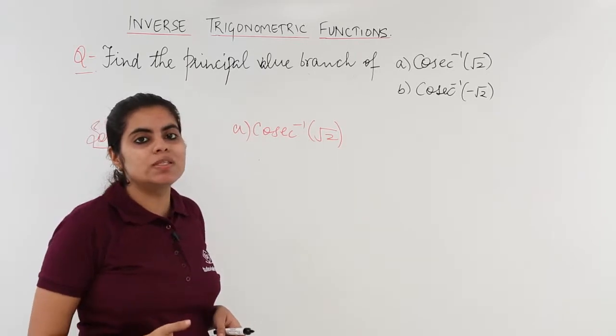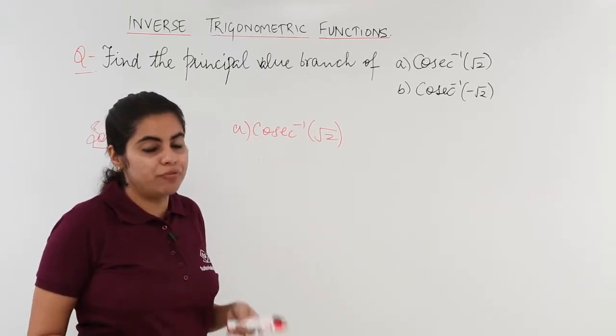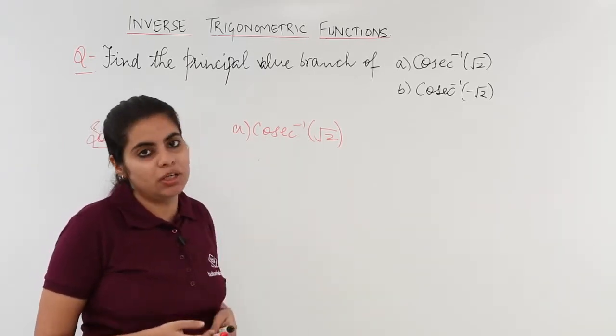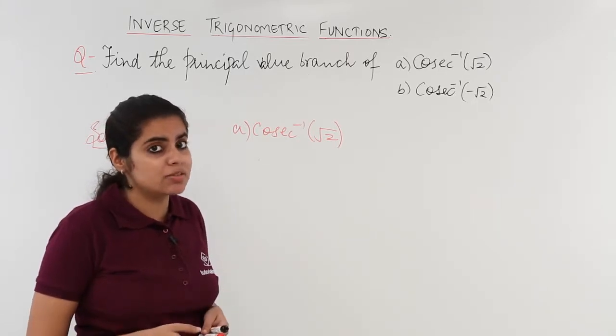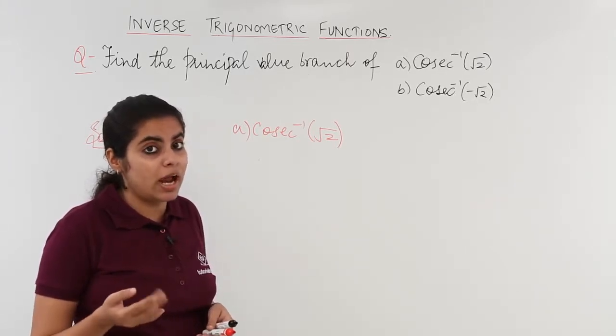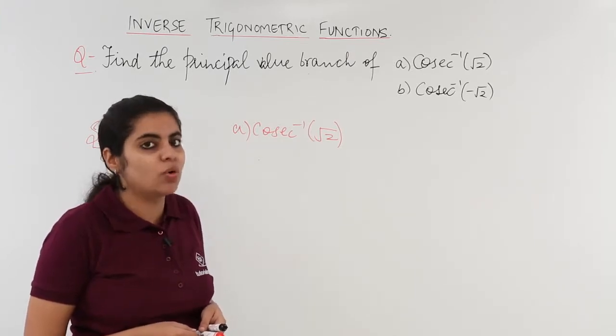I know that cosecant is root 2 when sine is 1 upon root 2, and sine is 1 upon root 2 at 45 degrees, which is pi by 4.